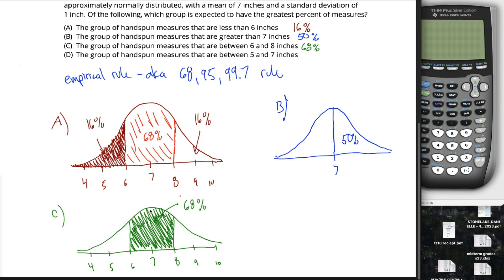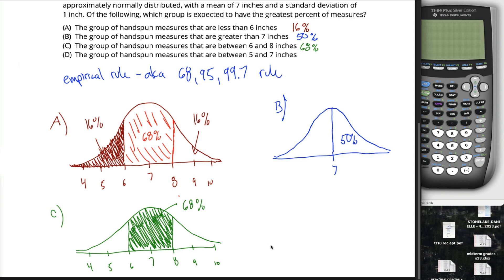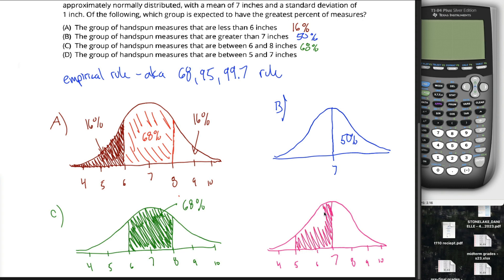What about part D? If D is greater than 68% it's the right answer; if it's less than 68% then C is the right answer. Hand span measures between 5 and 7 inches: if you're clever, you should recognize you don't even need to calculate the exact area. Because less than 7 would be exactly 50%, meaning the pink shaded area plus a little sliver sums to 50%, so pink is less than 50%. If it's less than 50%, it's certainly less than 68%.